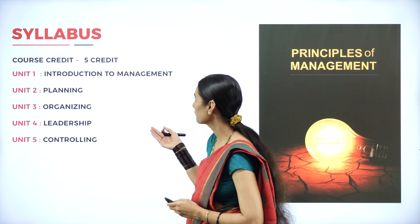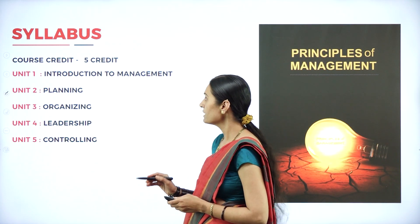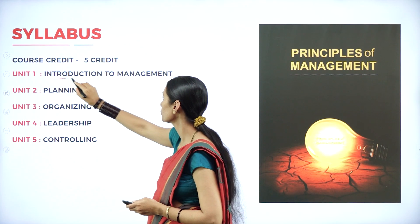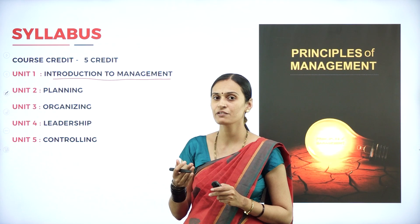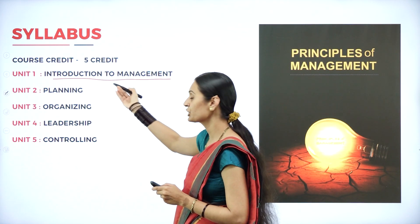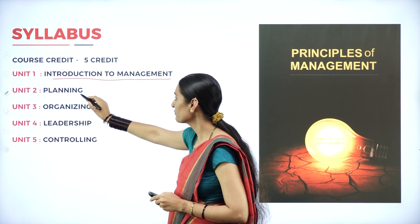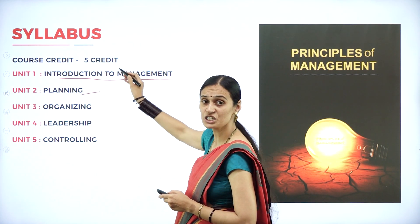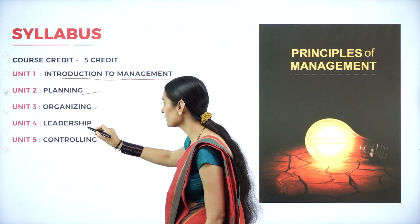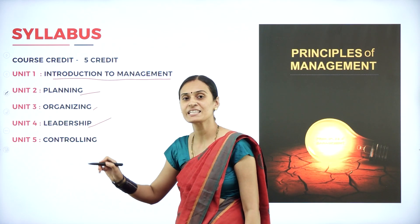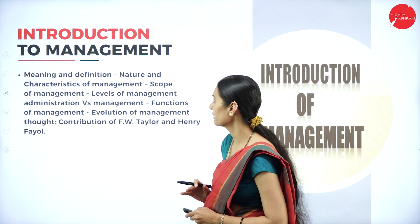These are the different units covered in this course. This is a five-credit course. The first unit is Introduction to Management. Then the other different functions of management — that is, planning, organizing, and the third chapter is leadership, and the last is controlling. So there are five chapters; let us discuss them briefly.